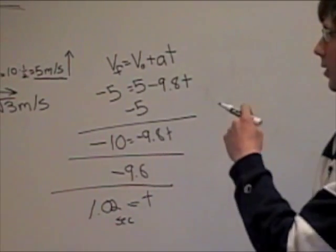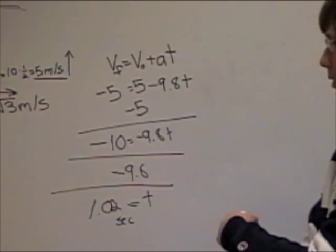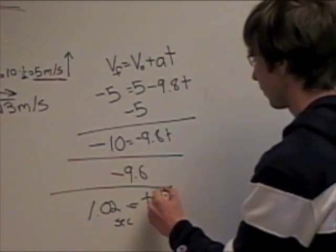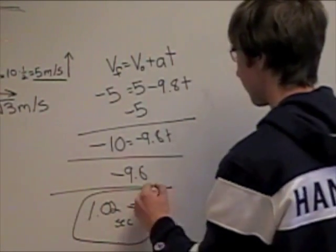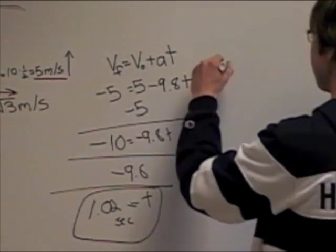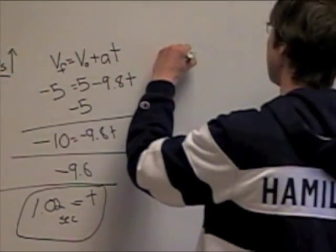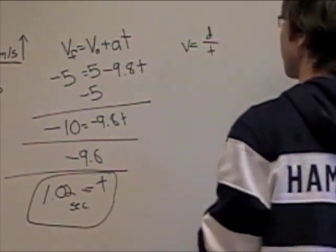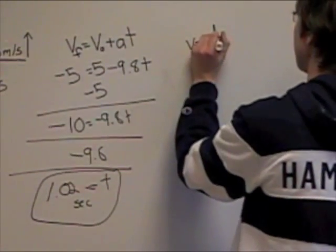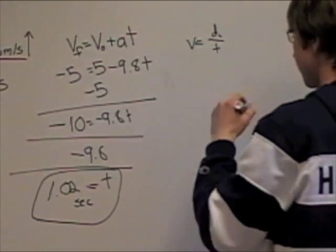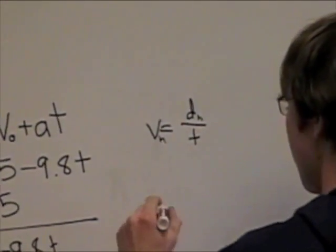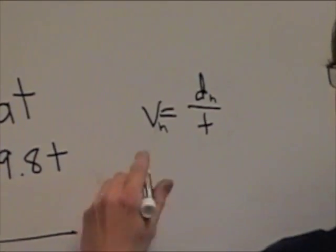Now, if you wanted to solve for how far the ball went horizontally, we need to use this in this equation. Now we know that velocity is equal to distance over time. And that's distance horizontal. And this is velocity horizontal. So that means that distance horizontal is equal to velocity horizontal times time.